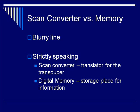The scan converter and digital memory — it's not really easy to describe what the difference between these two are; it's kind of a blurry line. Strictly speaking, digital memory is a storage place for information. The scan converter is technically the translator for the transducer, but in real terms, the scan converter is a computer processor and a certain part of digital memory.